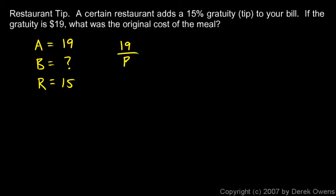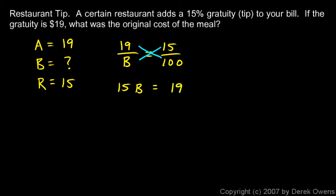So 19 over B — and B is what I'm looking for — is equal to 15 over 100. Then I'll cross-multiply and get 15B equals 19 times 100. I'll do that mentally and write down 1900, so 15B equals 1900. Then divide both sides by 15.